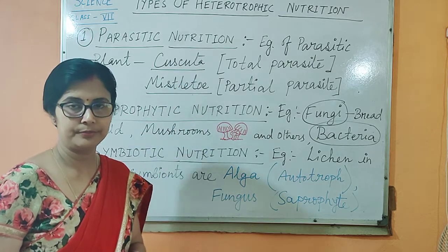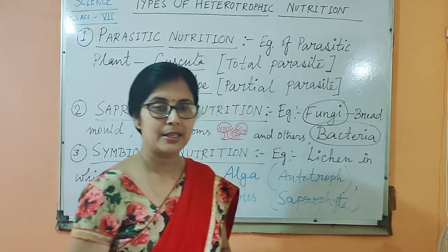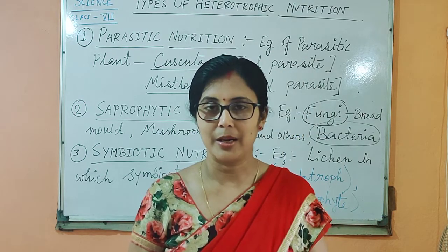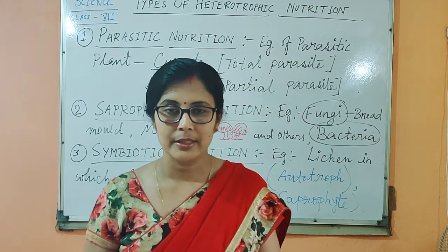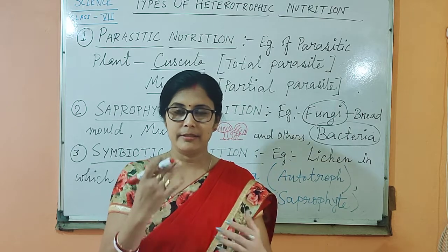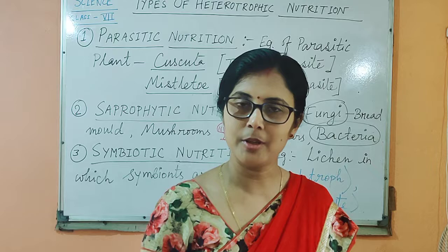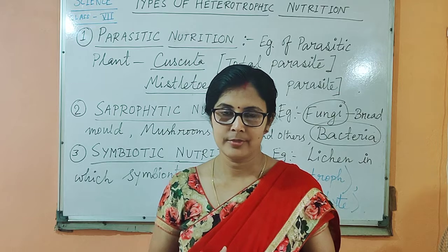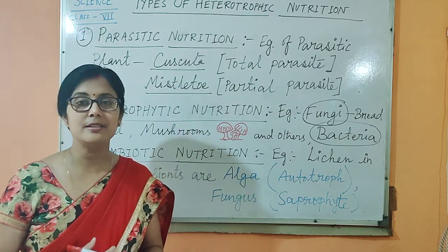These are the scientific names of the plants. One of them is a total parasite or complete parasite. It grows and absorbs nutrition from another plant. That other plant is called the host. So in parasitic nutrition, the relationship is called a host-parasite relation, in which the parasite absorbs nutrition from the host body and in return harms the host.